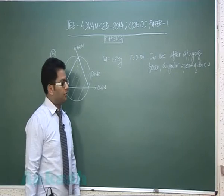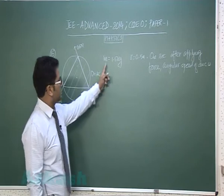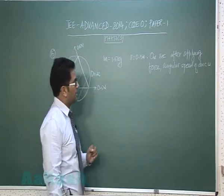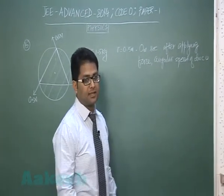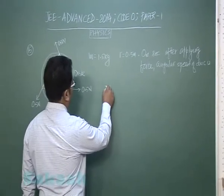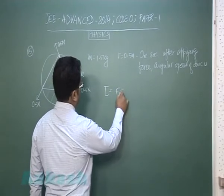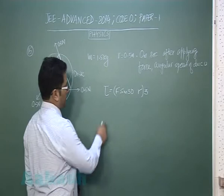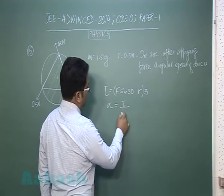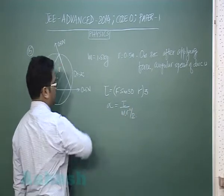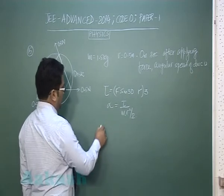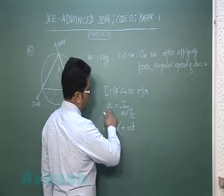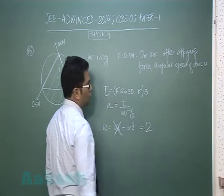Question number 15 is again from rotational motion. Showing the top view of a disk of given mass and radius. Three or four forces are acting on the disk. The question is, one second after applying the force, what is the angular speed of the disk? First calculate the total torque: F sin 30 × R is the torque due to one force, multiplied by 3 is the net torque. Angular acceleration α is τ/I where I is mr²/2. Since α is constant, ω = ω_initial + αt. But ω_initial is 0, so with α and t = 1 second, you get the answer as 2 radian per second.